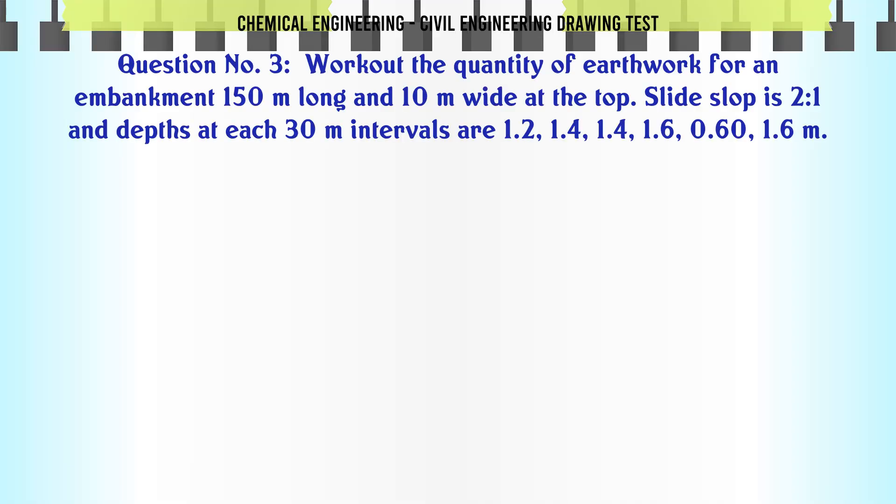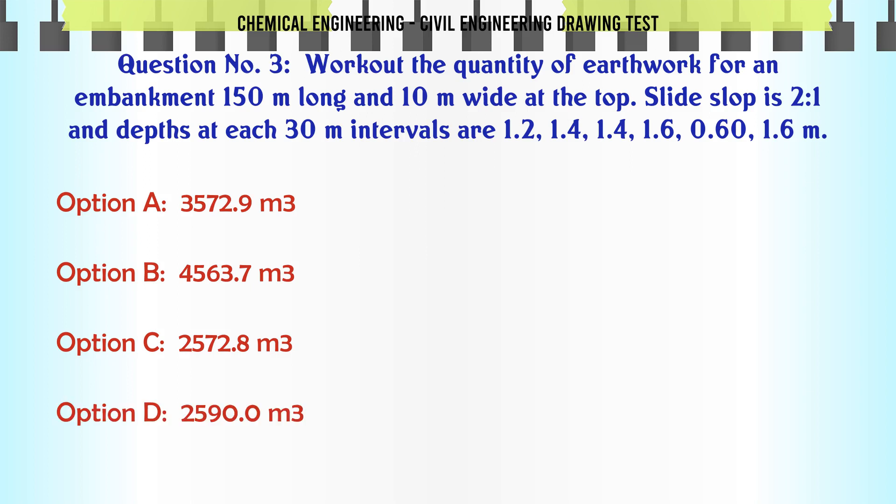Work out the quantity of earthwork for an embankment 150 m long and 10 m wide at the top. Slide slope is 2:1 and depths at each 30 m intervals are 1.2, 1.4, 1.4, 1.6, 0.60, 1.6 m. A. 3,572.9 m³. B. 4,563.7 m³. C. 2,572.8 m³. D. 2,590.0 m³.